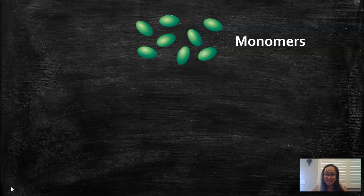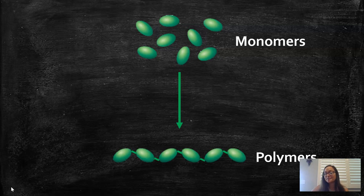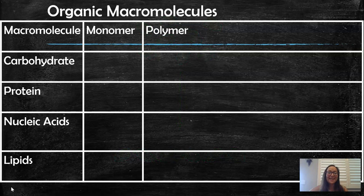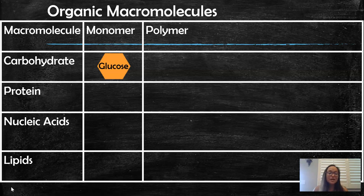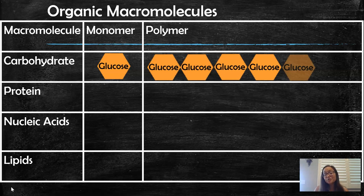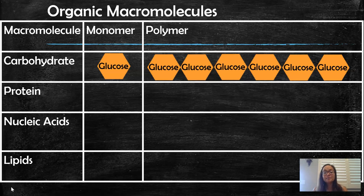Monomers join together to form polymers, and polymers can be broken down back into monomers. Here's an overview table of our organic macromolecules. Carbohydrates are made of carbon, hydrogen, and oxygen. The monomer is glucose, and the polymer can be a number of different polysaccharides — for example, starch, which is found in potatoes.